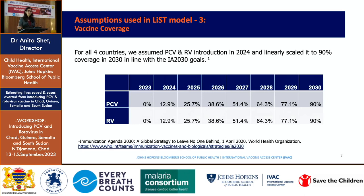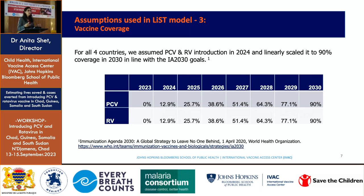For coverage, we're saying 2024 is when these two vaccines would be introduced in these countries, with a linear scale-up. The IA2030 target of 90% coverage is what we aim for, but the early years — 2024 and 2025 — are quite conservative. Typically, countries come up to their regular routine vaccine coverage within two to three years. We are intentionally going with a conservative estimate to get these numbers.